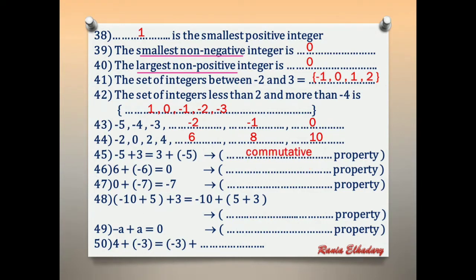Number 46: 6 plus negative 6 equals 0. We have number 6 and its inverse negative 6 — a number and its additive inverse. The answer is 0. This property is called additive inverse.